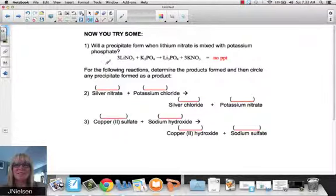Let's just do a couple of reactions for practice. Will a precipitate form when lithium nitrate is mixed with potassium phosphate? So here they gave us the balanced equation. We're looking at the two products. Well, we just said nitrates are soluble, no exceptions. So that's going to be aqueous. And phosphates are soluble. And lithium is a group 1 element. So this is also aqueous.